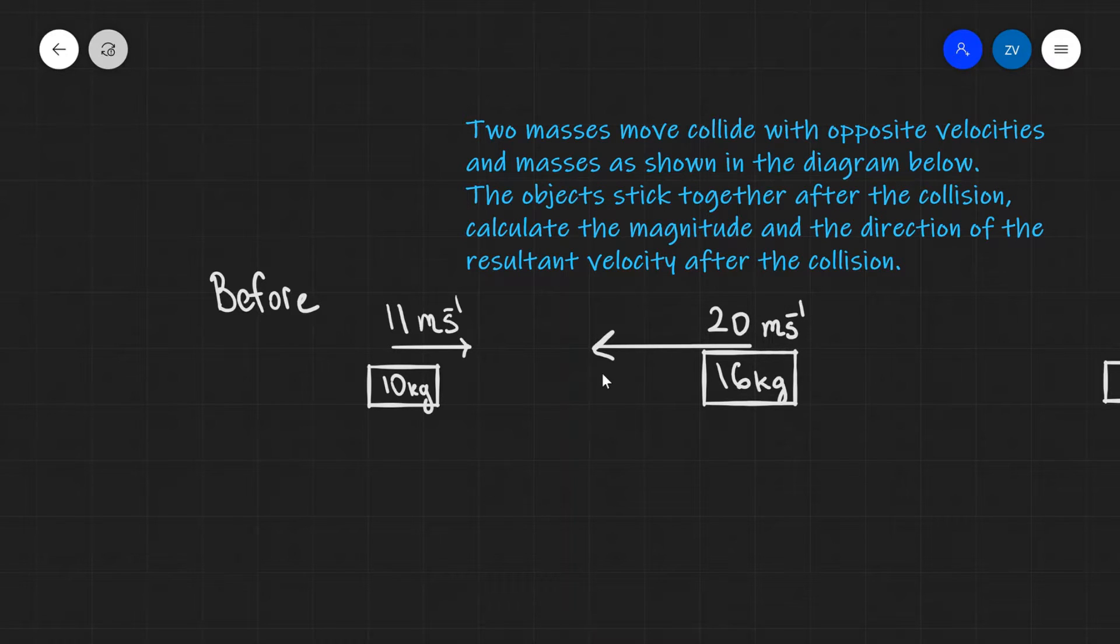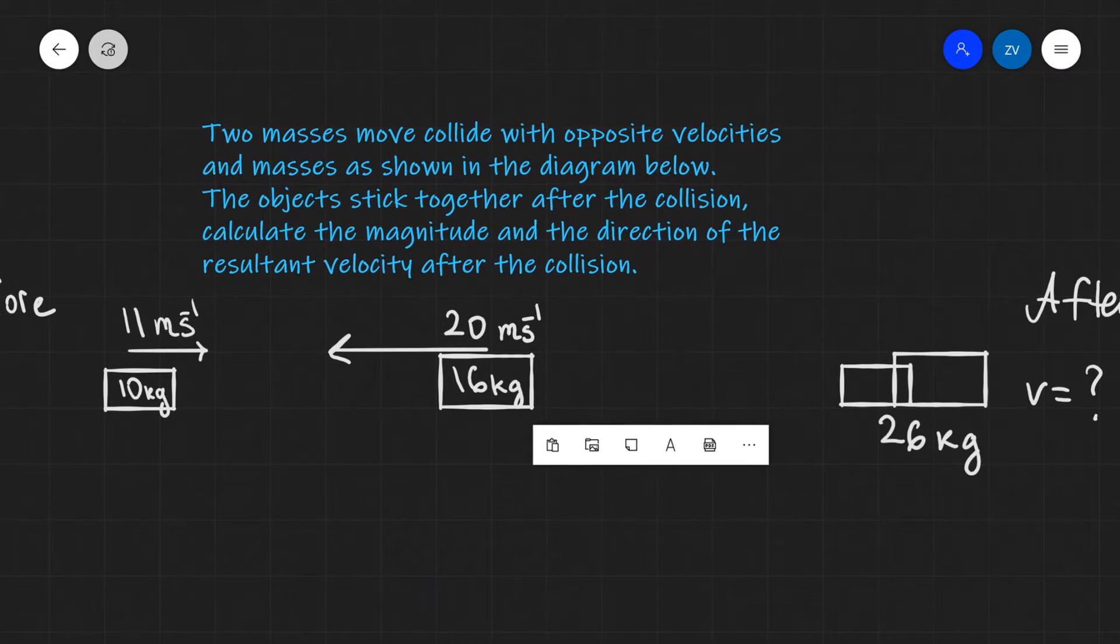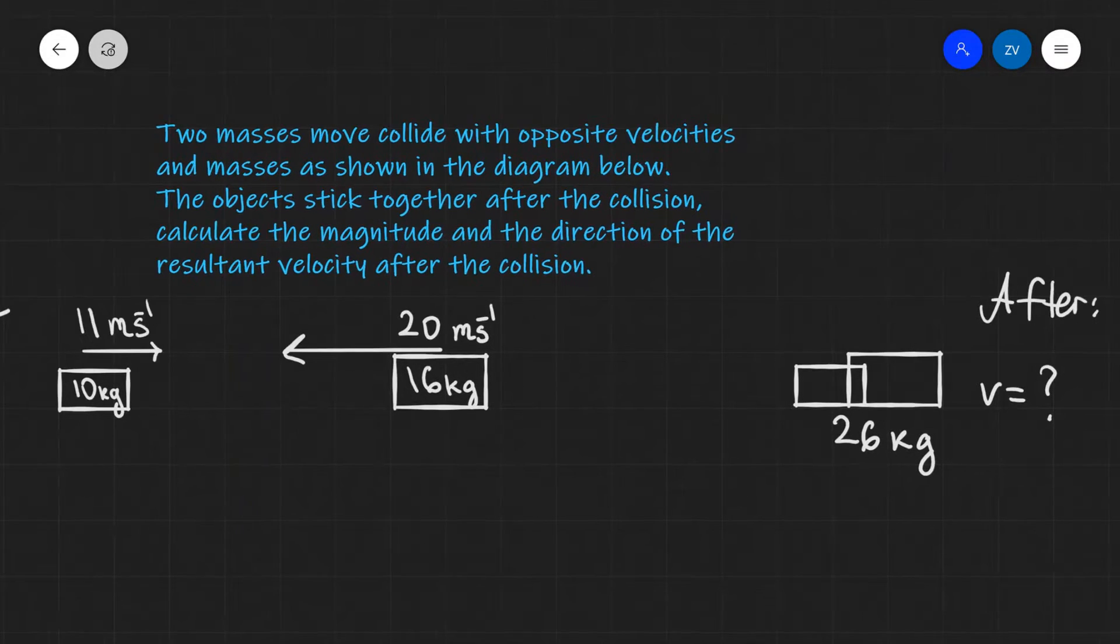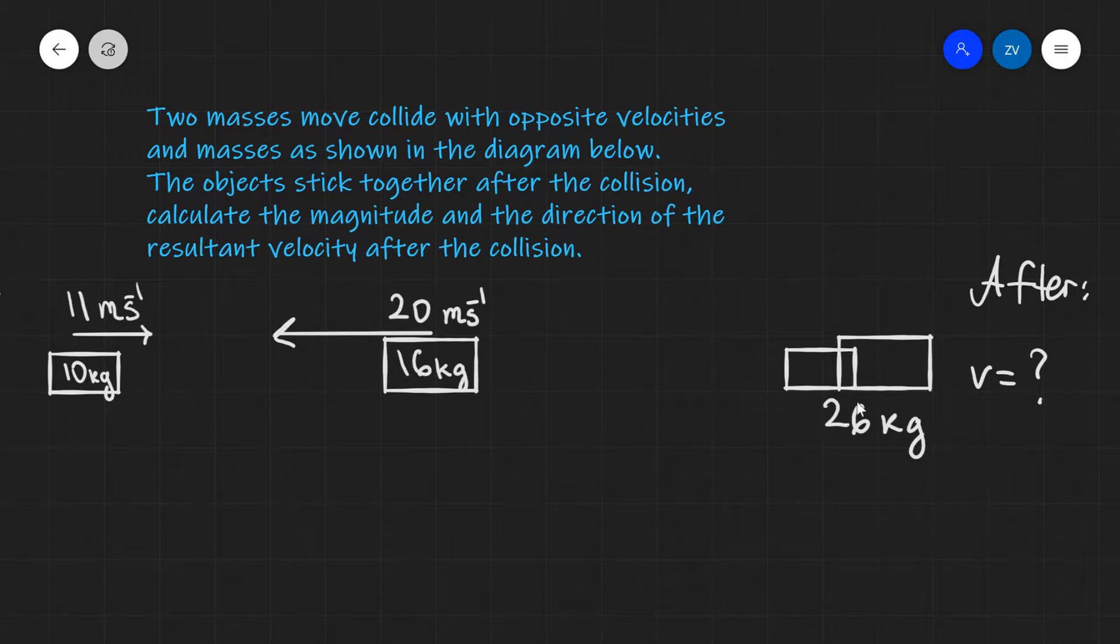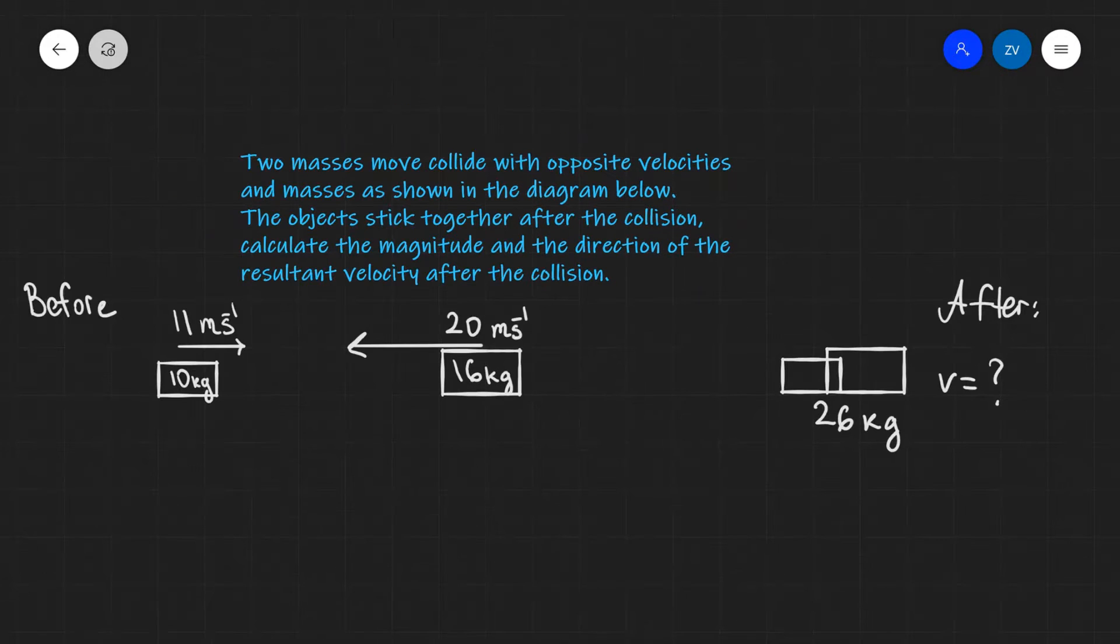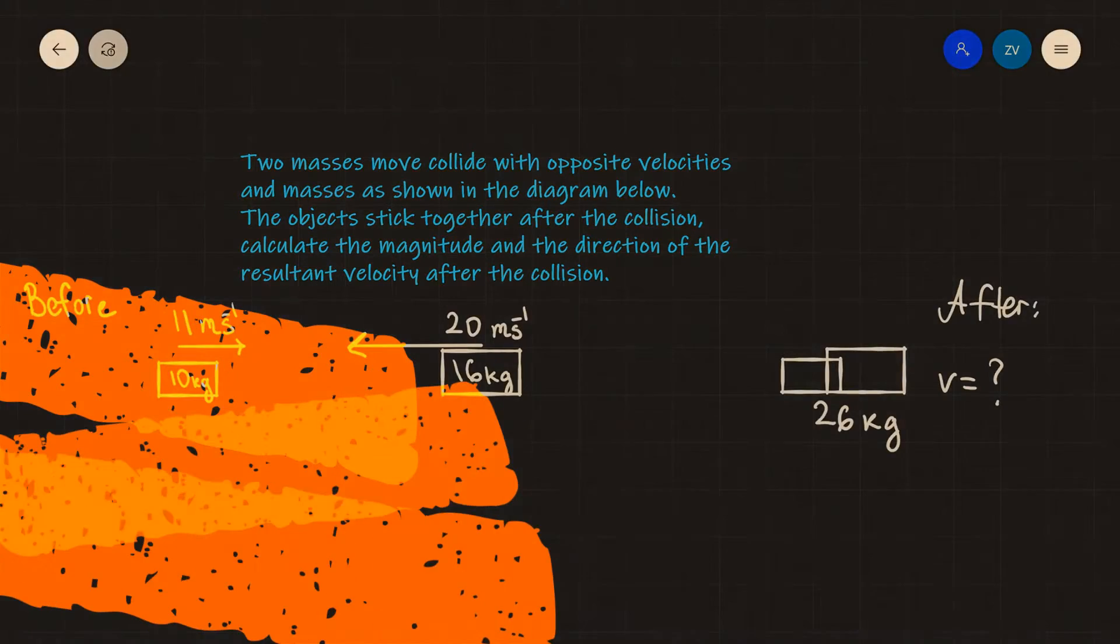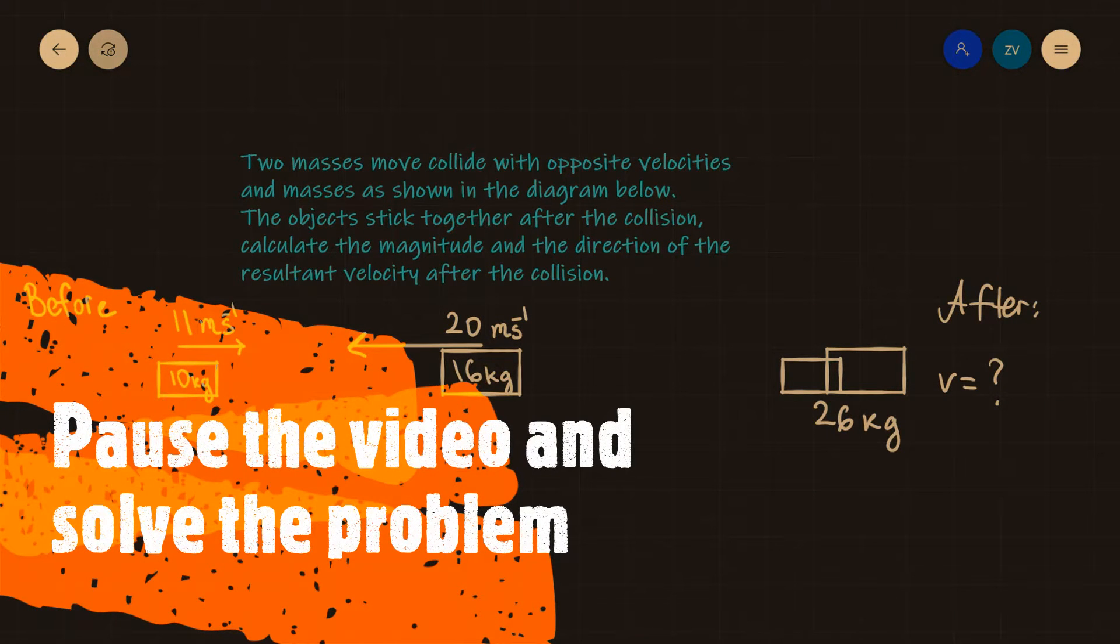After the collision, the two objects stick together, so this is actually an example of an inelastic collision. There will be a total mass of 26 kilograms and our job is to determine the magnitude and the direction of the resultant velocity. This will be a perfect opportunity for you to pause this video and attempt this question.